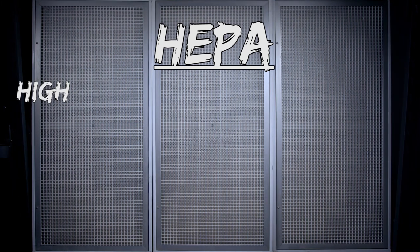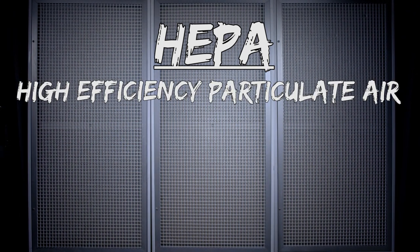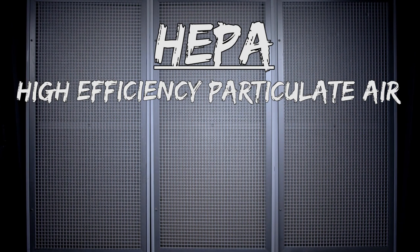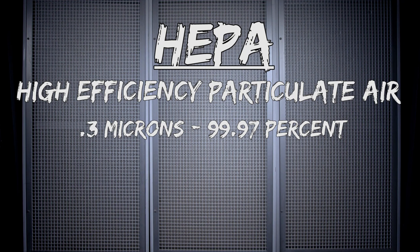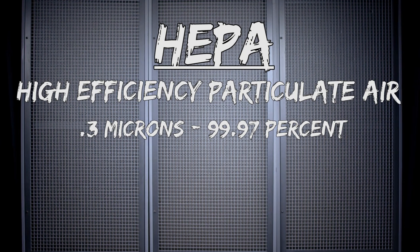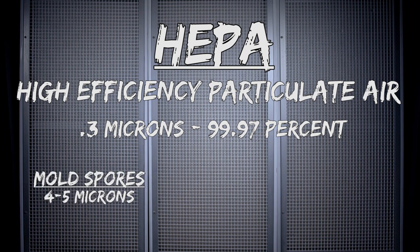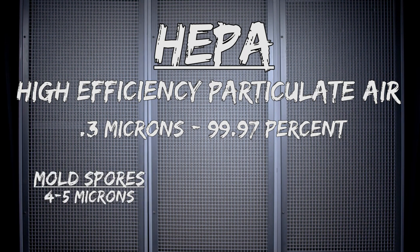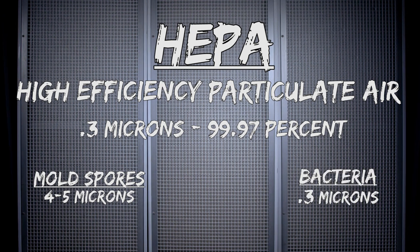HEPA stands for High Efficiency Particulate Air. This is a standard term used for filters that can sift out airborne particles as small as 0.3 microns in size with a 99.97% accuracy. For reference, airborne mold spores can be as small as 4 to 5 microns in size, while bacteria can be as small as 0.3 microns in size,